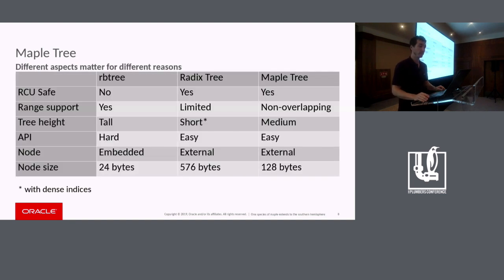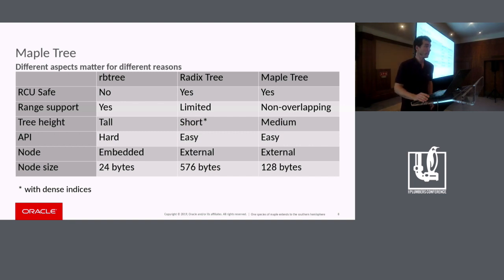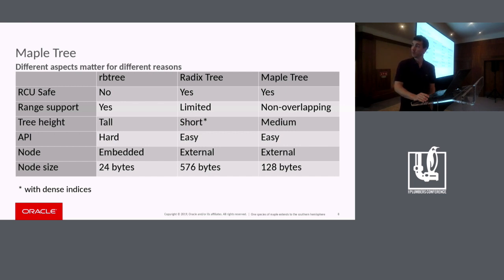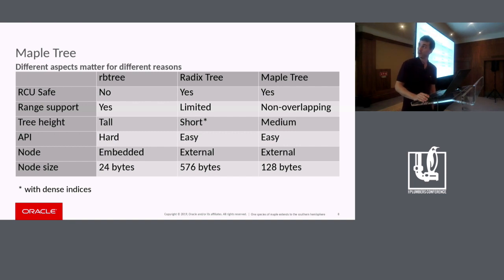Here's an overview of the tree nodes. There are different uses for each tree type, but we believe the maple tree can make the kernel more efficient. If you notice, the rbtree is not RCU-safe — that's kind of a limitation.